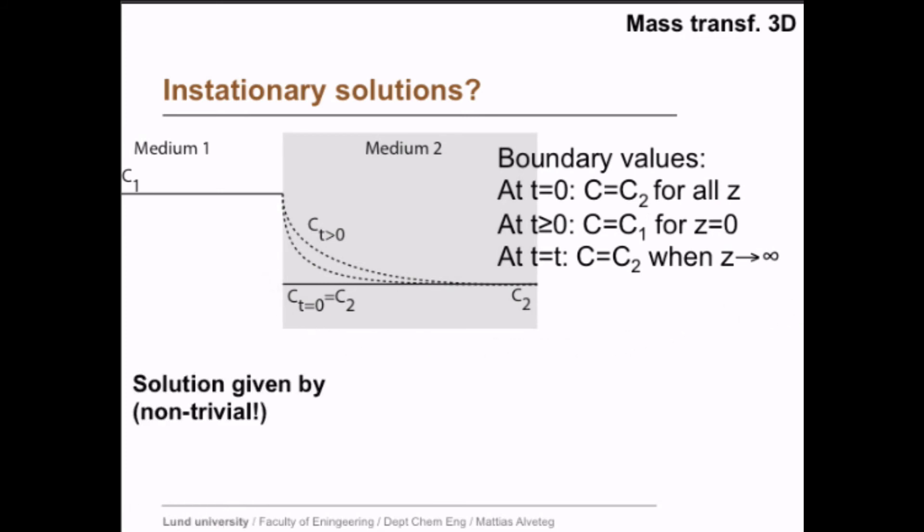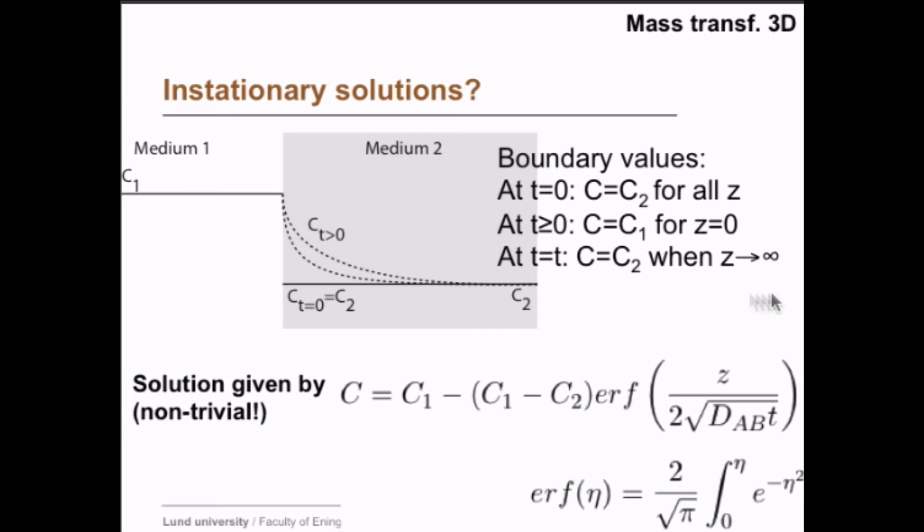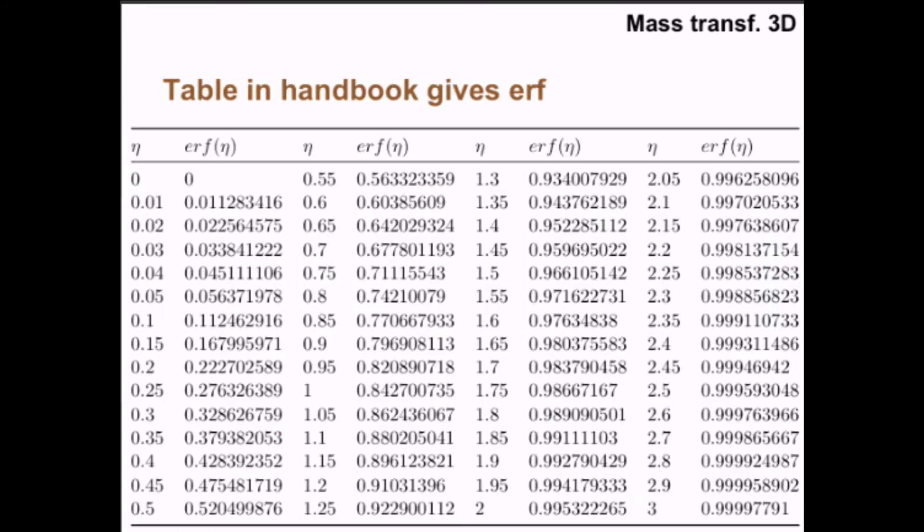The solution for this equation is given by, and this is not trivial, this equation here. So the concentration at time t is the concentration in medium 1 minus the difference between the two concentrations c1 minus c2 times the error function of the distance divided by 2, and here we have the diffusivity and the time. And the error function is given by this equation here, and you might have that on your calculators, or else you can use a table like this.